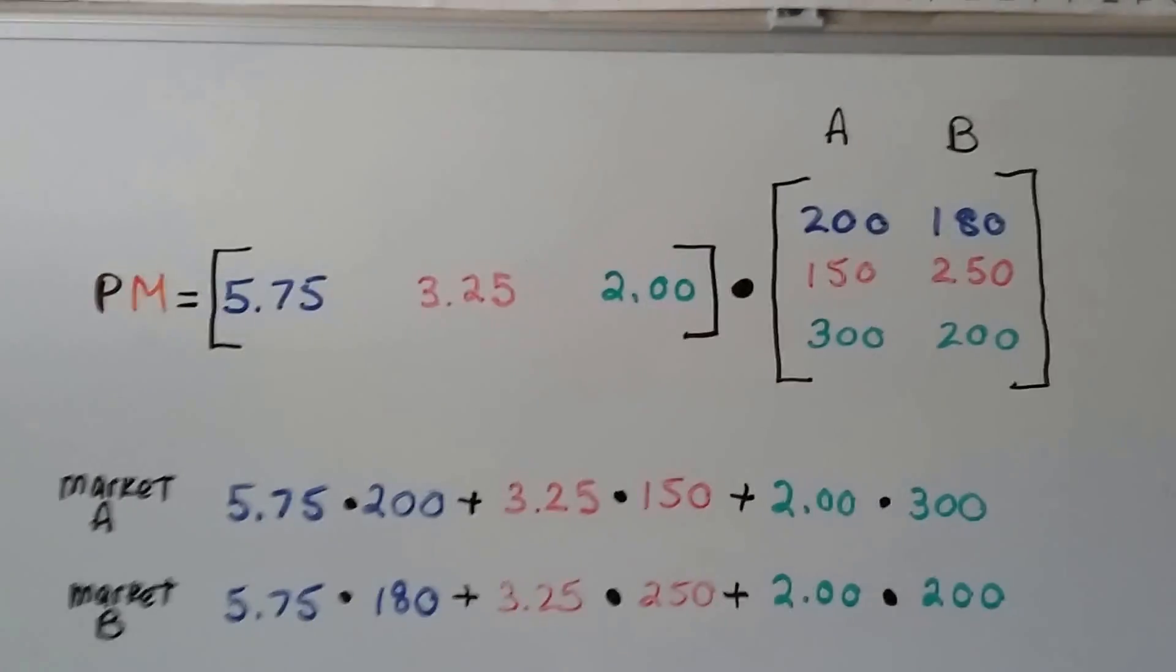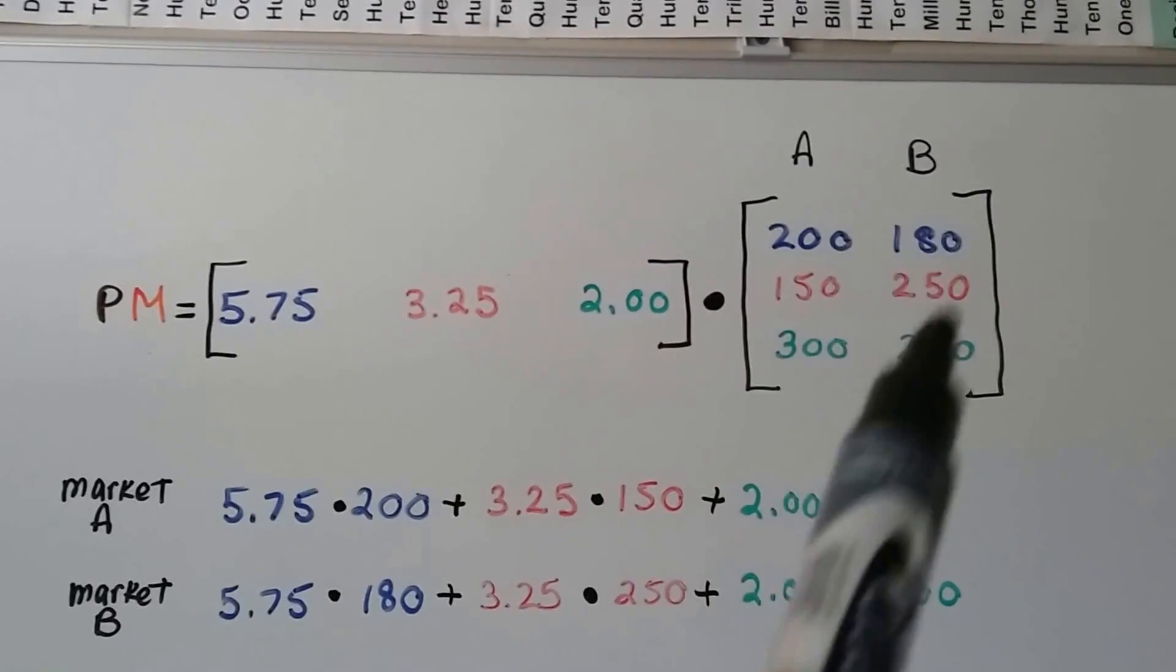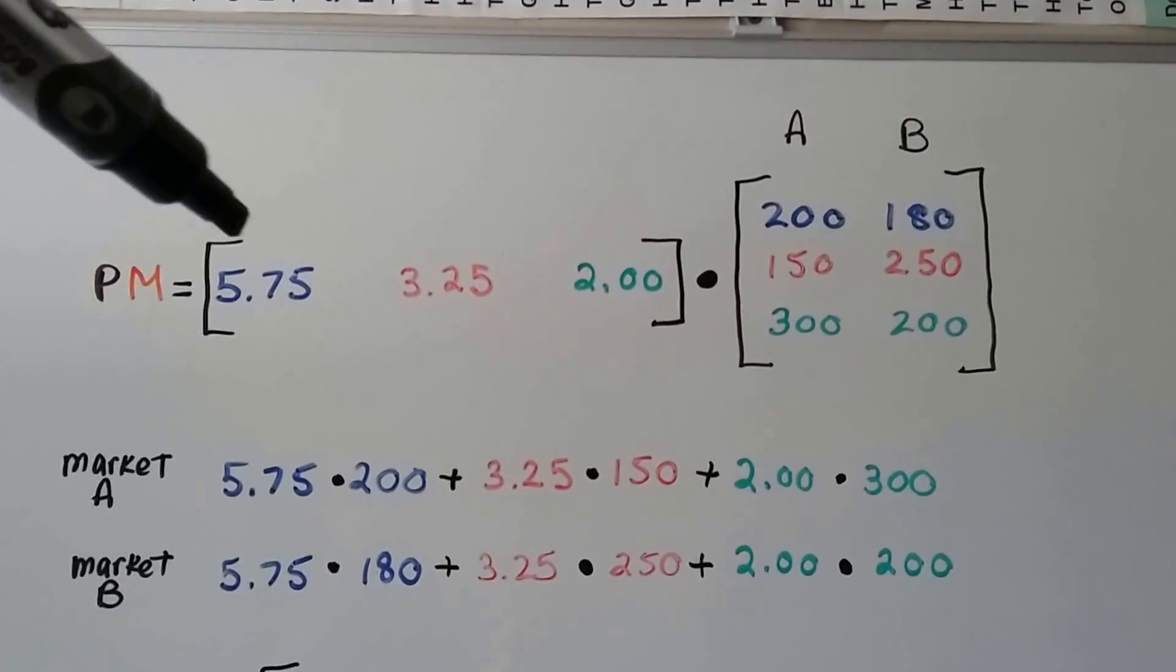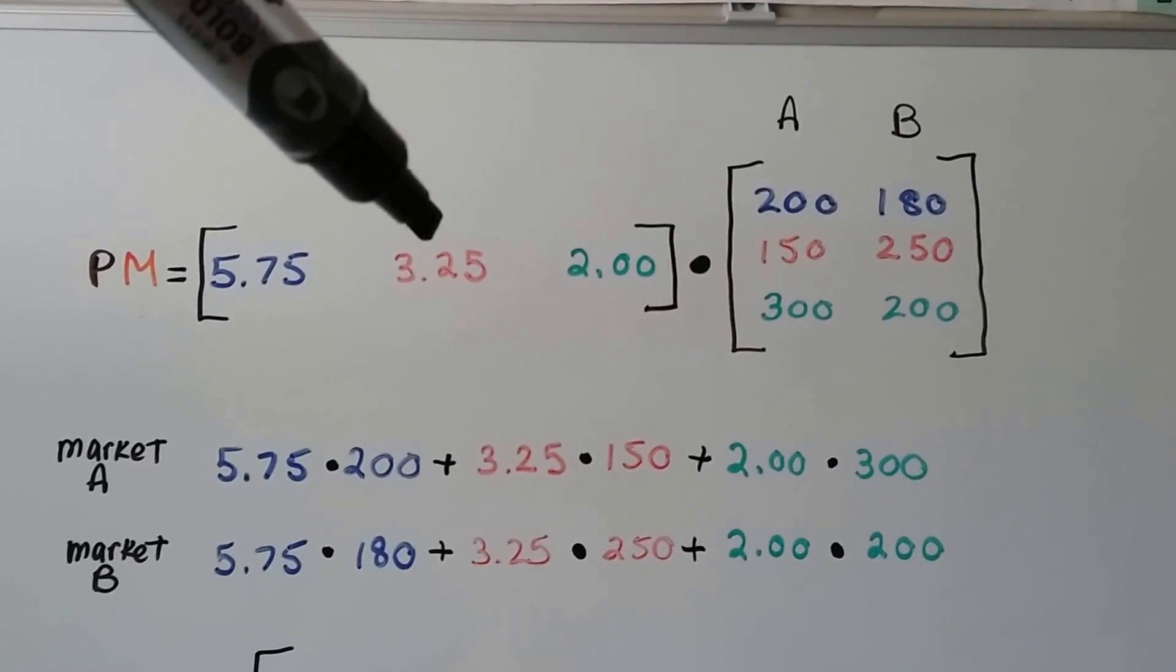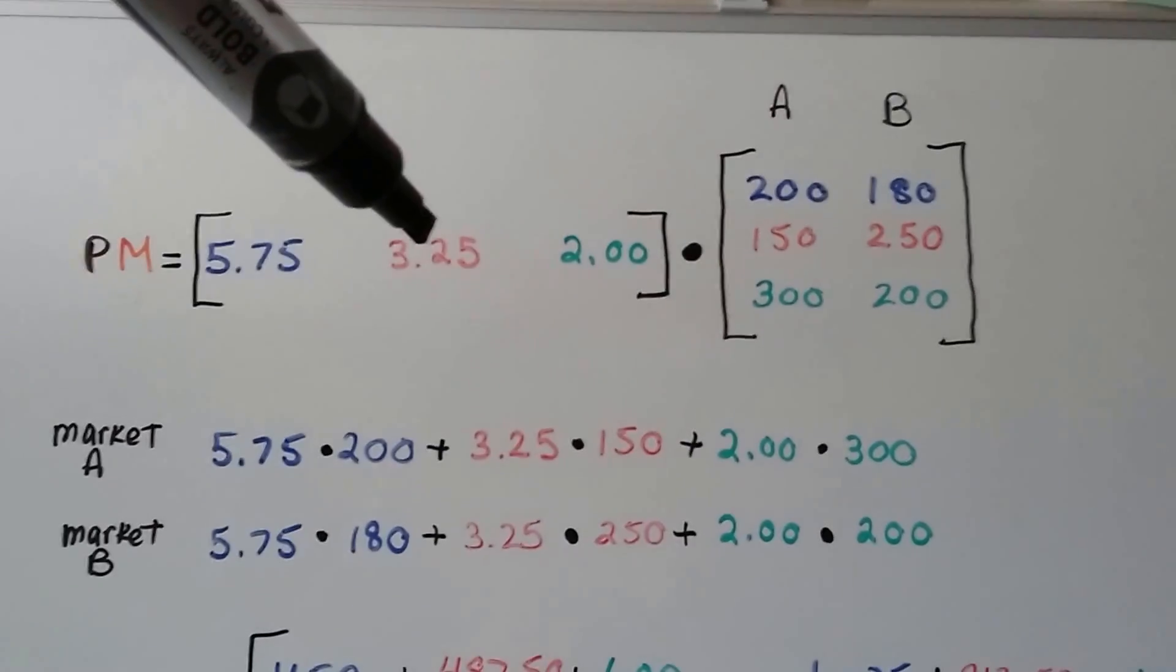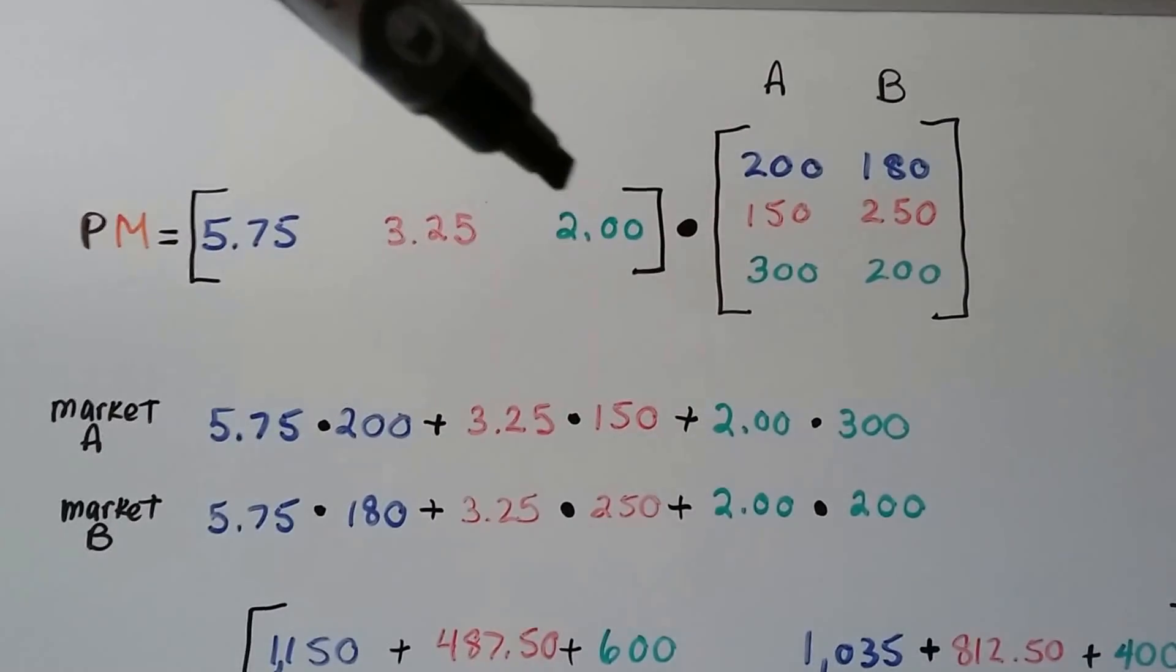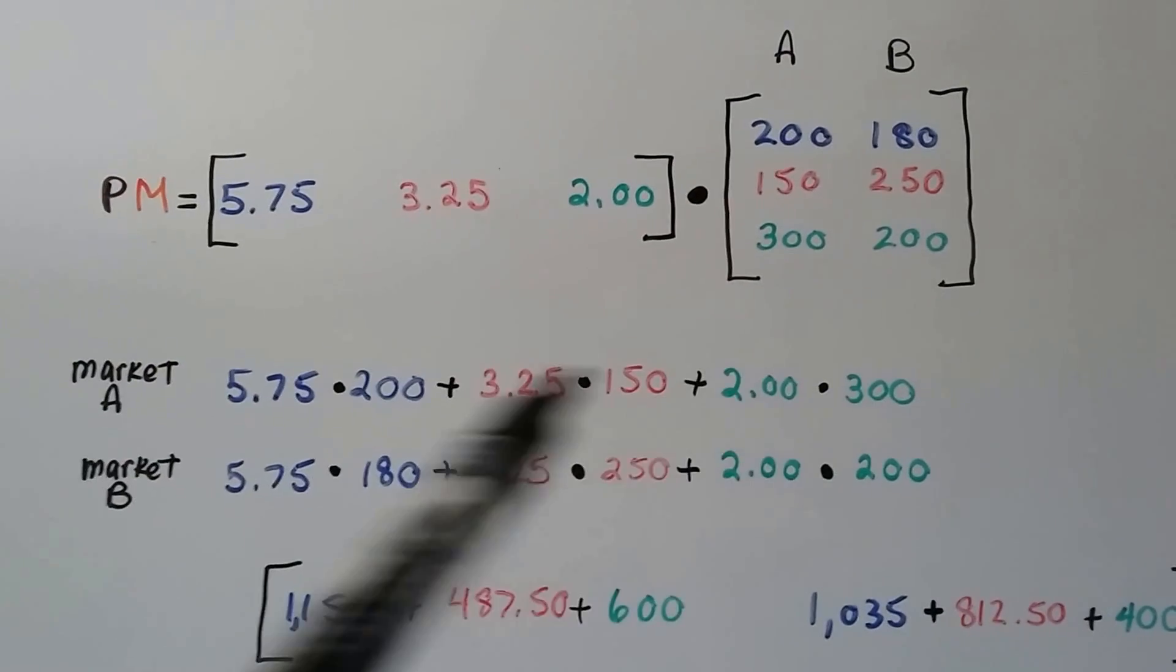We write our matrices. Here's our profits. We're going to multiply it by the amount sold at the markets. Here's A and here's B. And we do $5.75 times 200, and we add that to $3.25 times 150, and we add that to $2 times 300. We do our multiplication and addition.